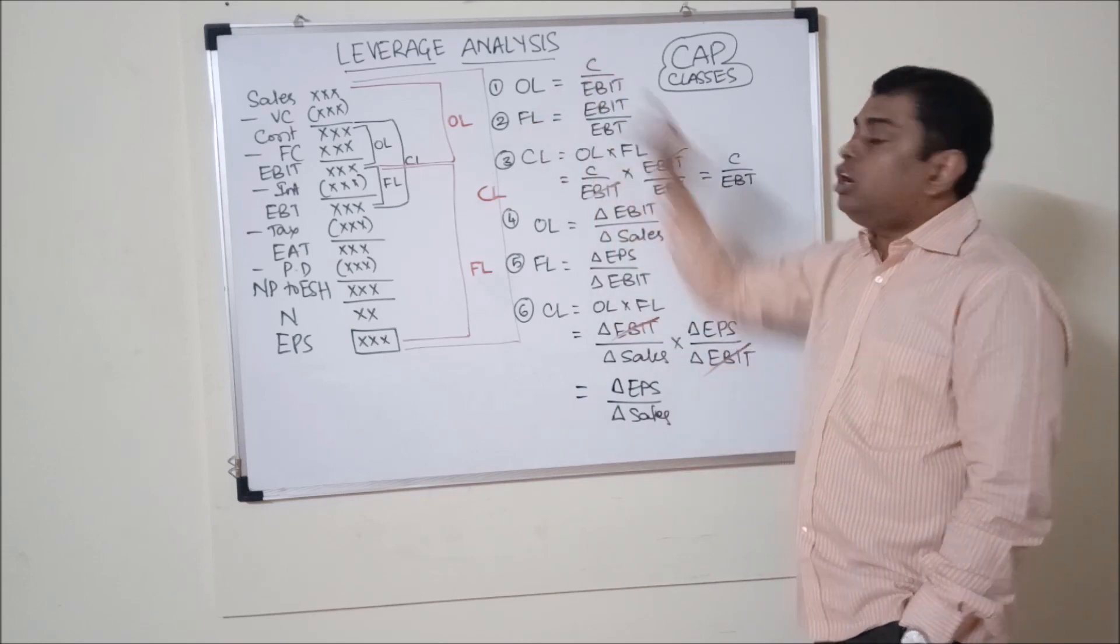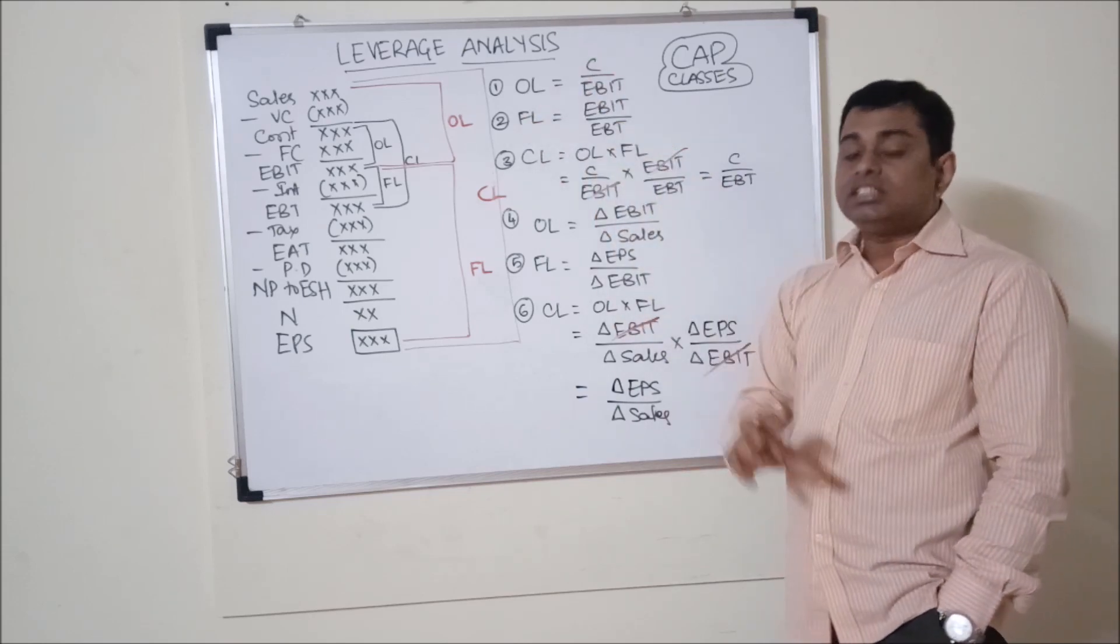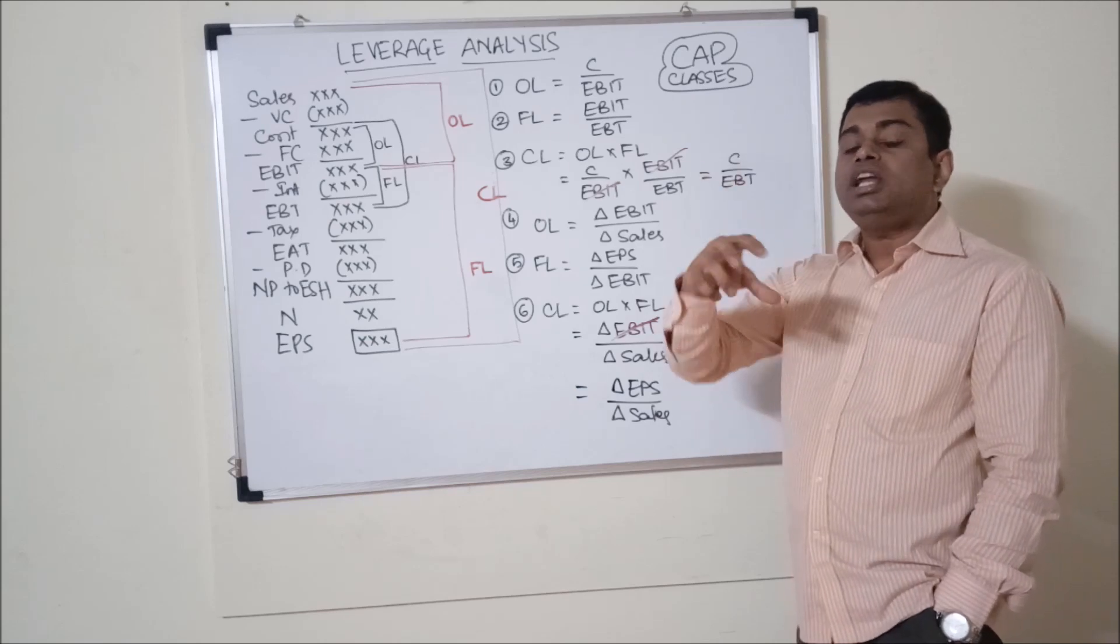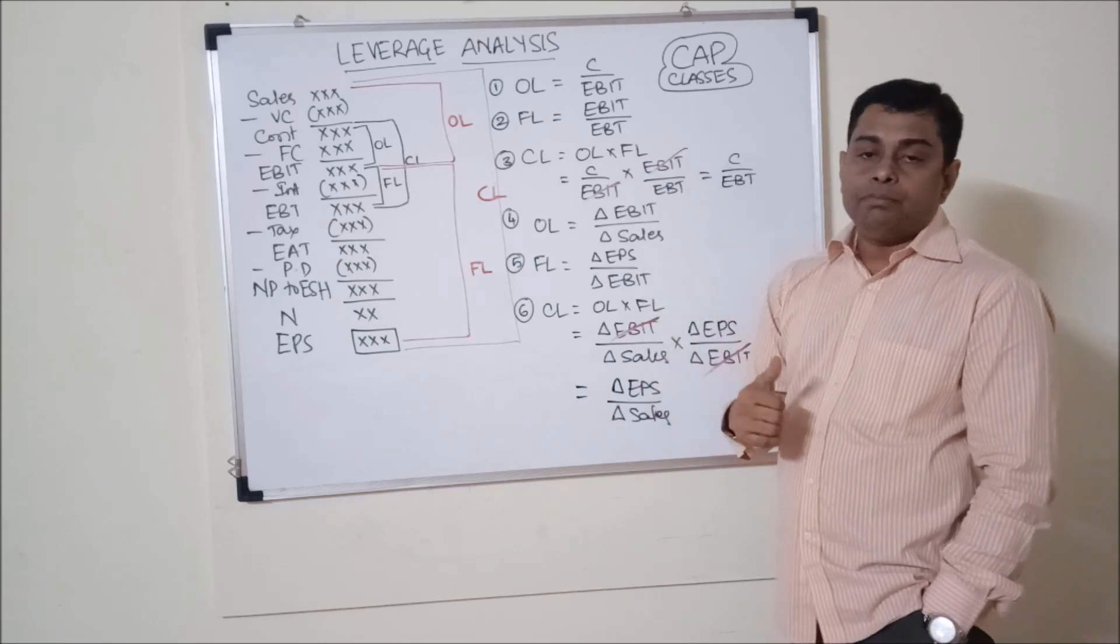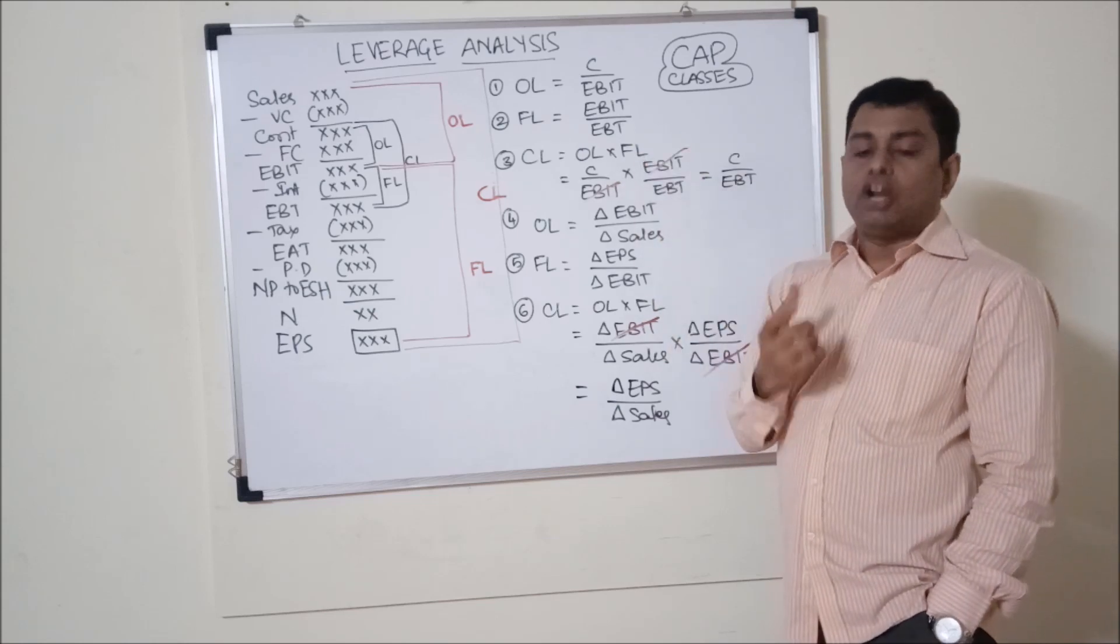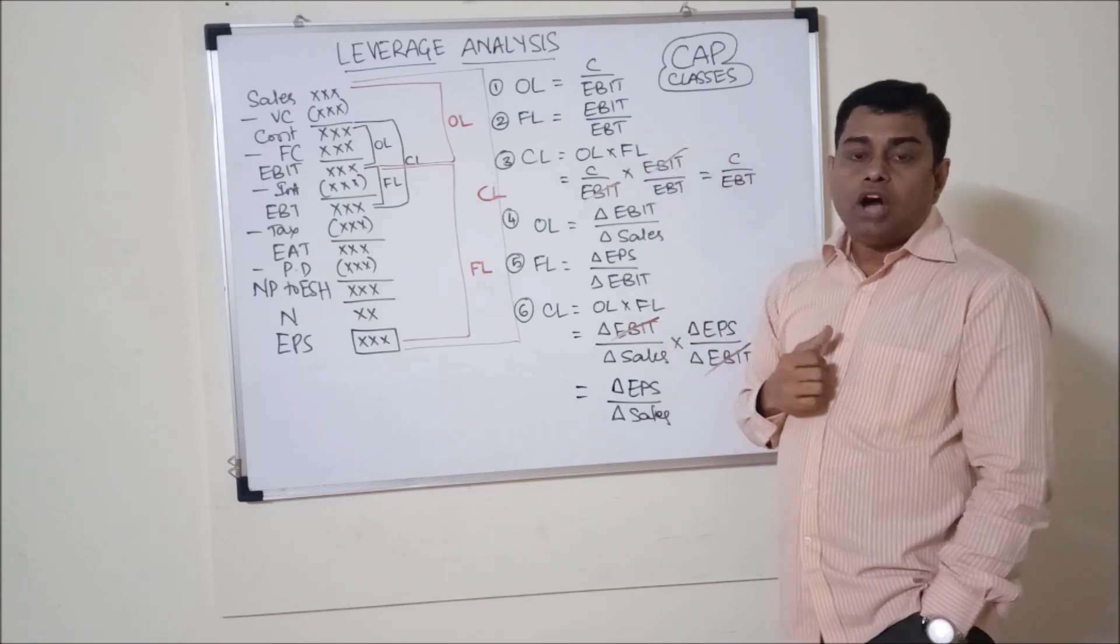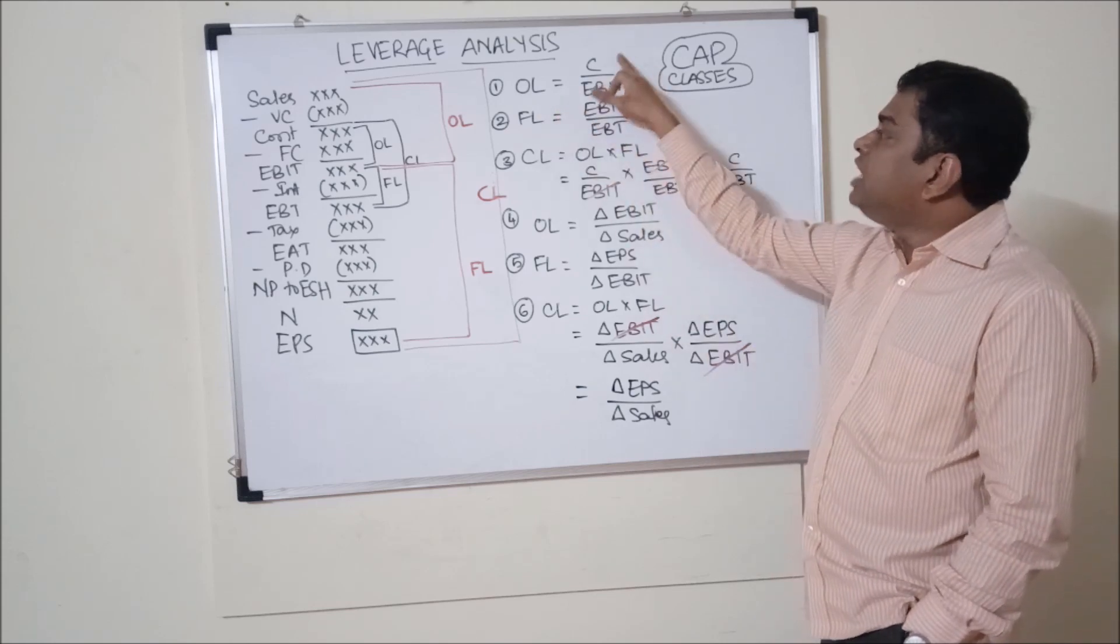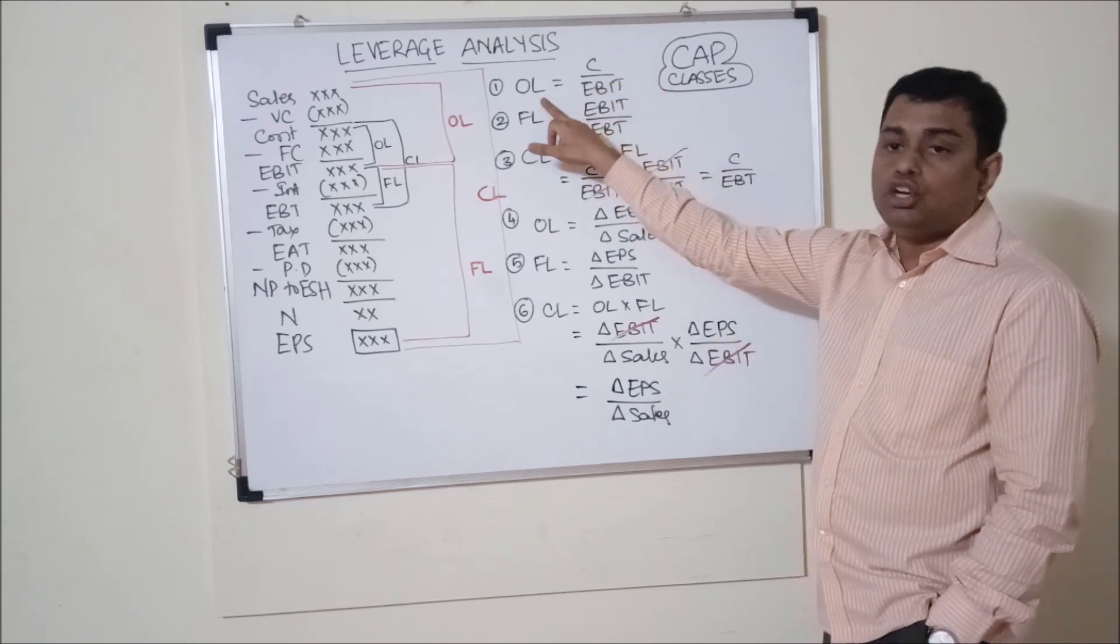Operating leverage is 3 times means contribution per EBIT. This means how many times contribution is more than EBIT. If I have operating profit of 1 rupee and if I have contribution of say 3 rupees, so this will be 3 rupees divided by 1 rupee, that is equal to 3.